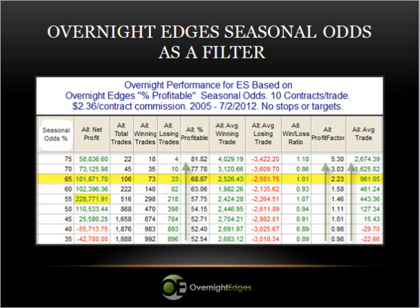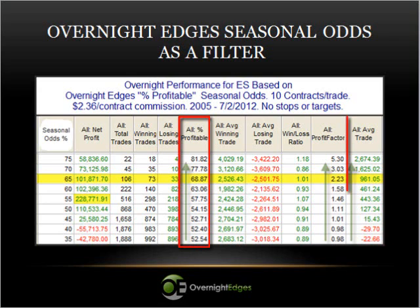While I have found that stops and targets can be utilized to help manage risk and potentially improve performance, they were not used in running this test. The first thing to note is that the statistics generally improved when higher odds were required. This suggests the approach used to determine those odds were in fact effective over the 7.5 year period. The three columns with green arrows demonstrate this concept best. As you can see, the winning percentage, average trade, and profit factor all rose steadily by requiring higher seasonal odds.